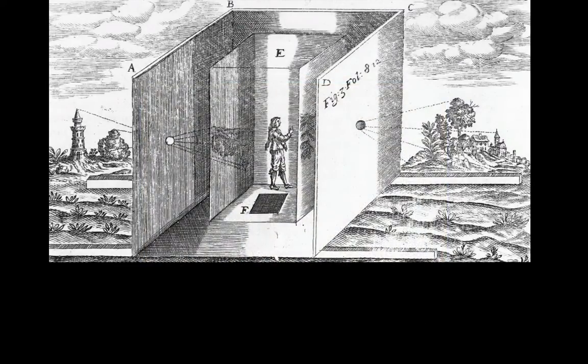The discovery, in fact, that refracted light from nature can project an upside-down, accurate representation of a scene in a darkened room through a small lens-free hole was recorded as early as the 5th century BC by Chinese philosopher Mo Ti.